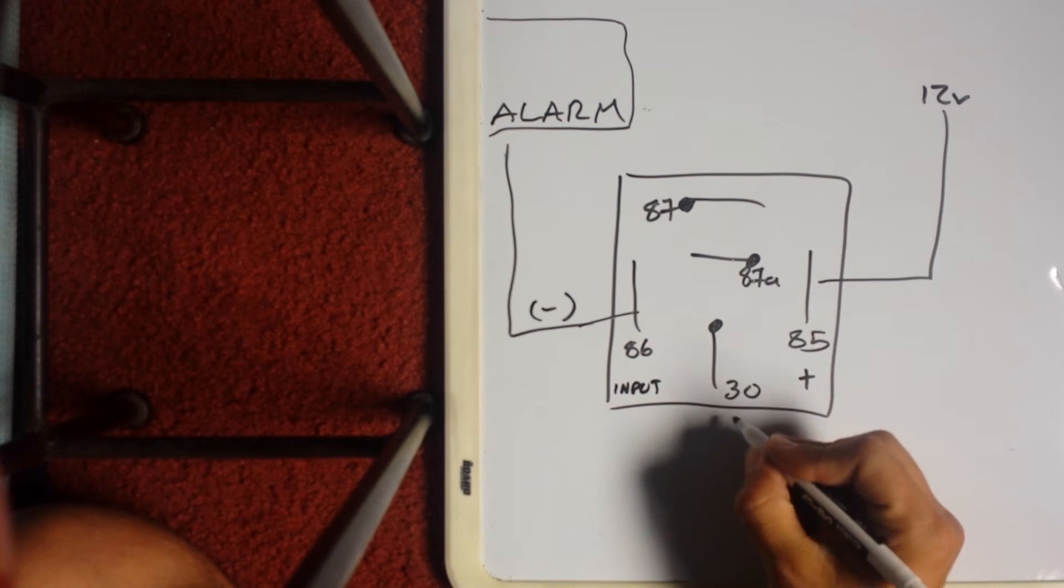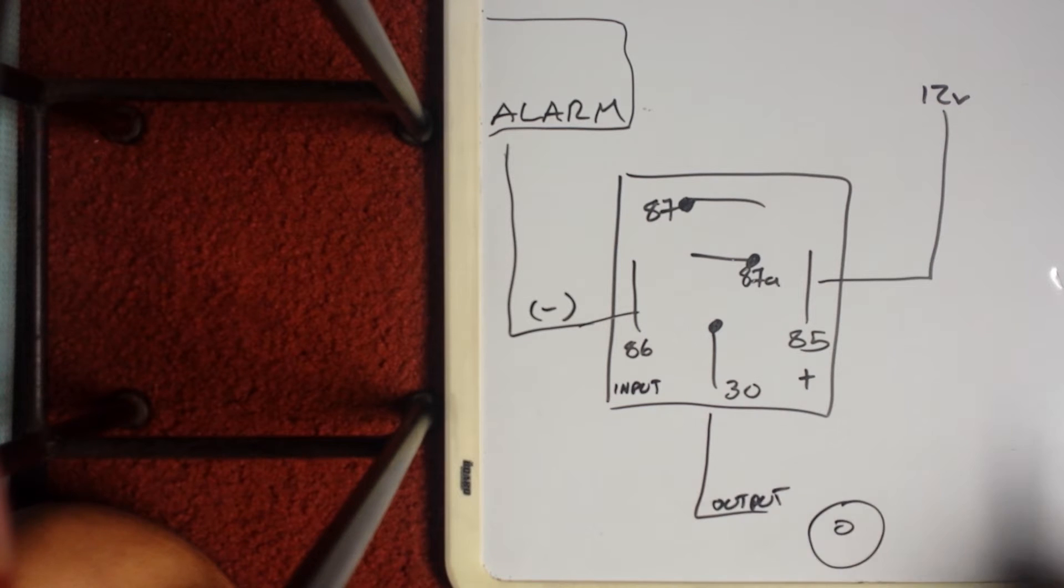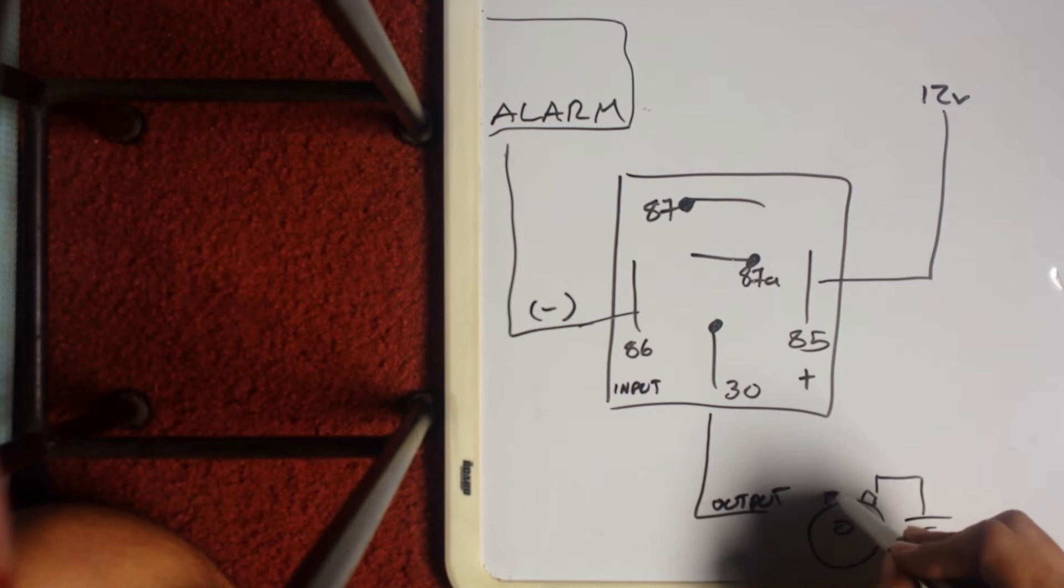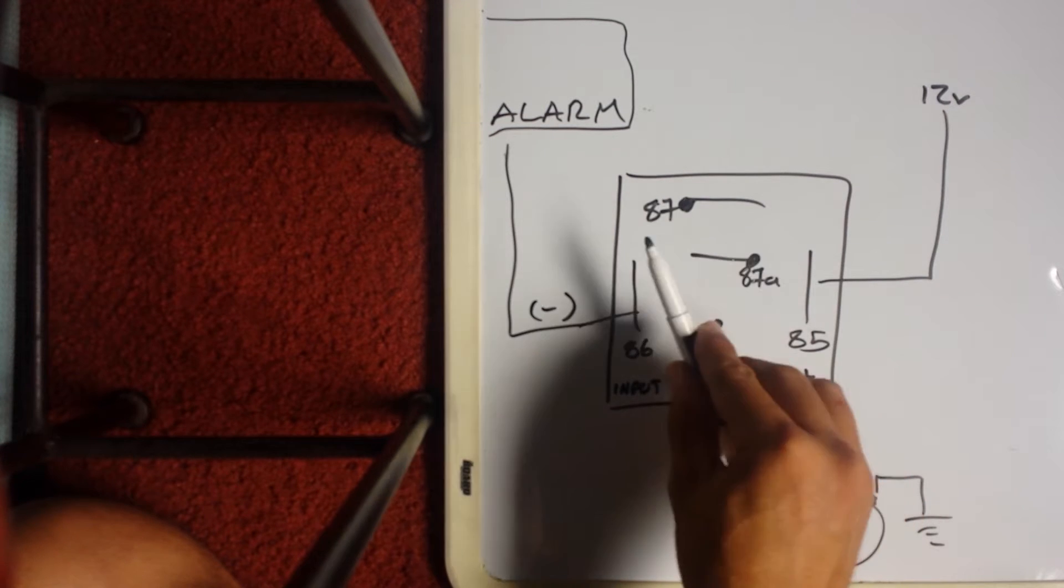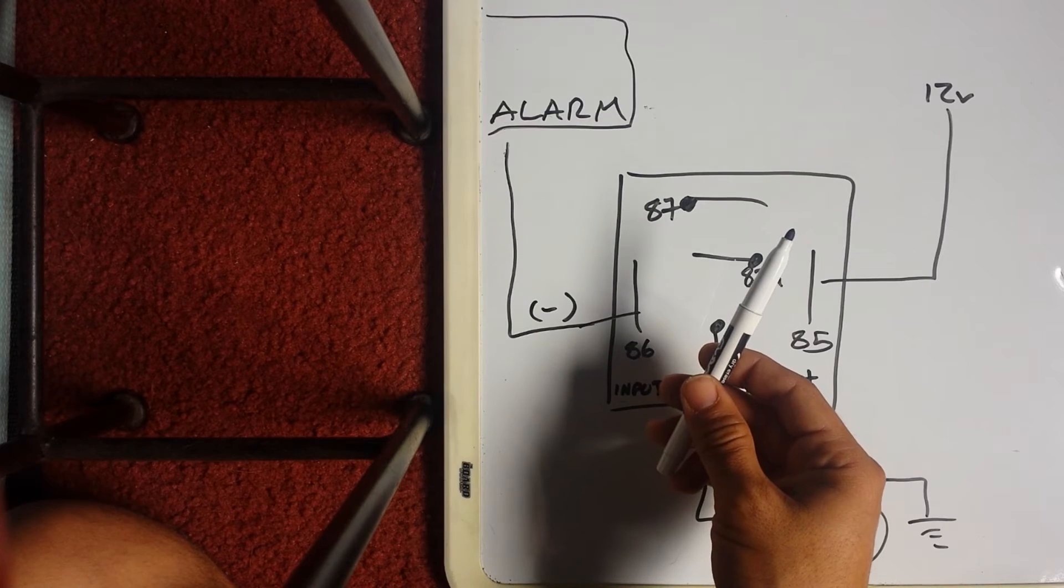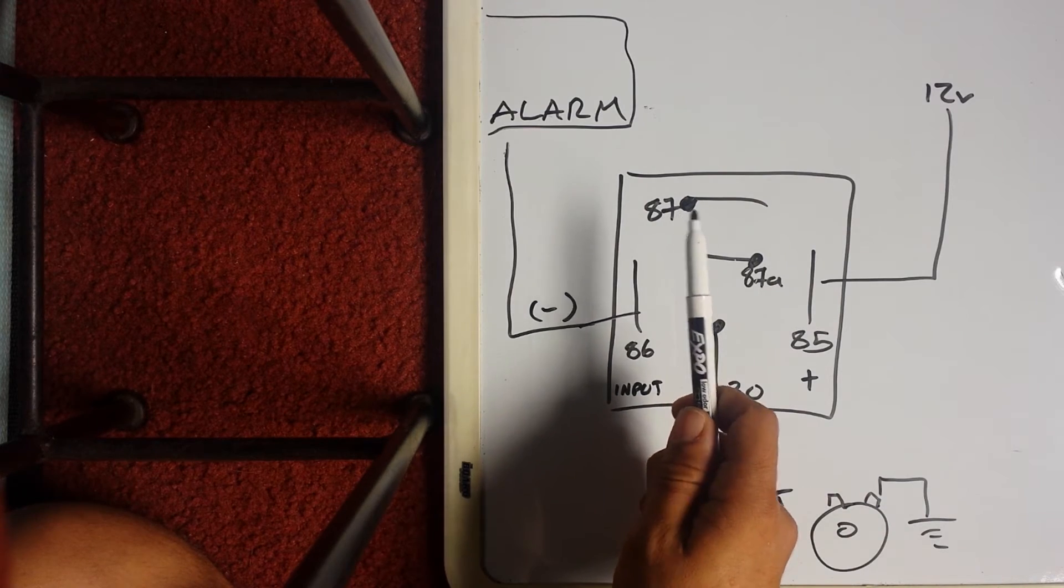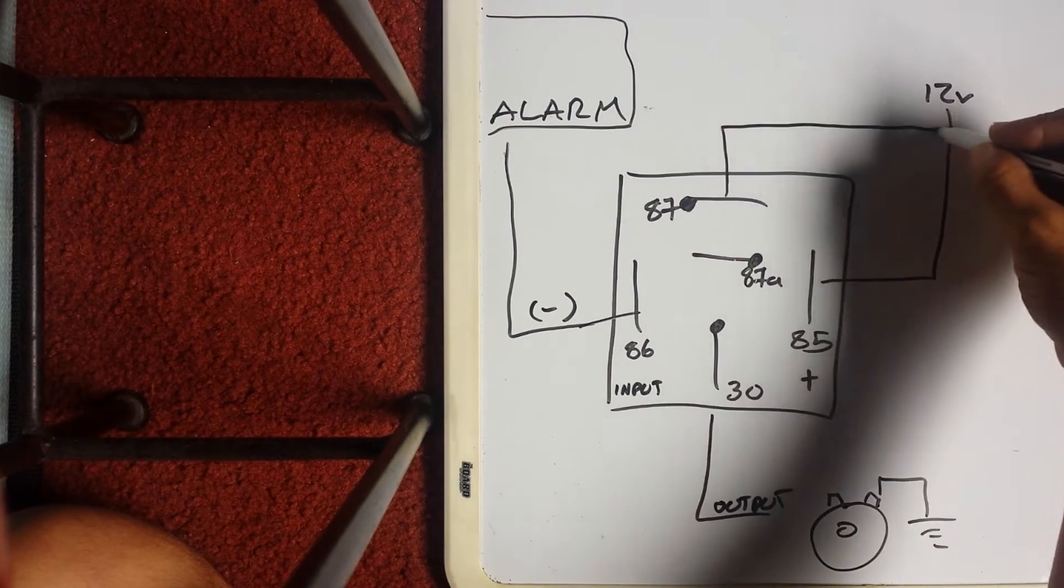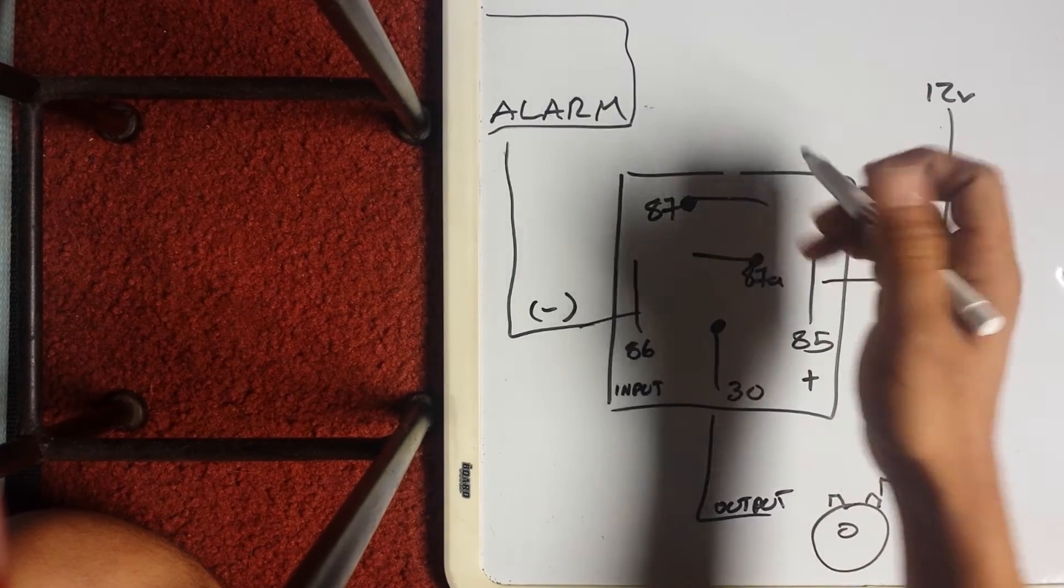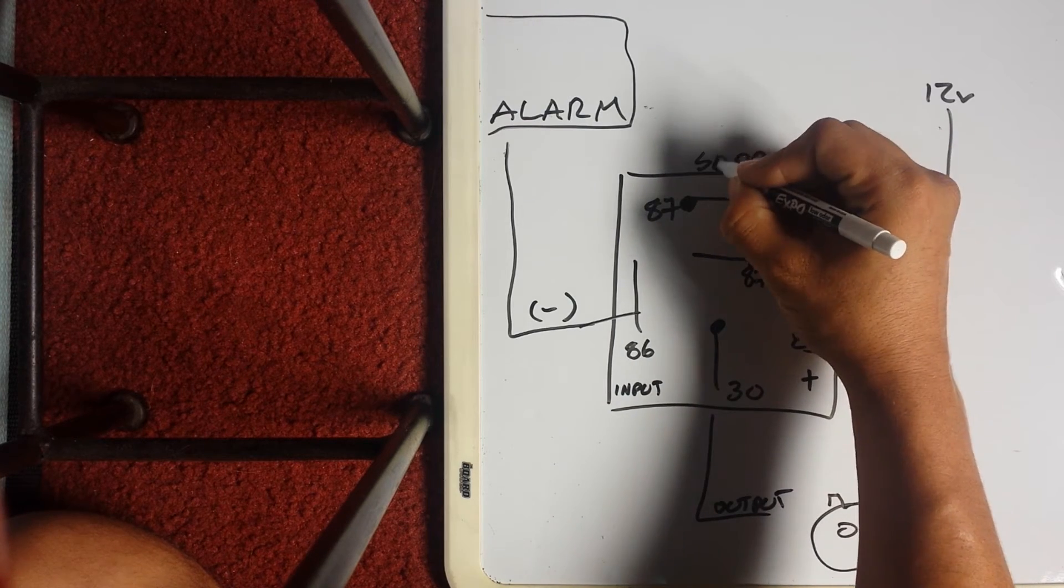If it's getting continuity from here and we haven't tied 87a to nothing and 30 is getting nothing, I like to consider 30 my output to the horn. It's resting at ground so we need our 12 volts on this side. Every time it clicks we're going to get our power from 87. You can consider 87 your supply source.